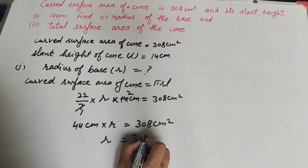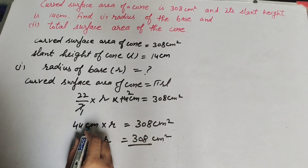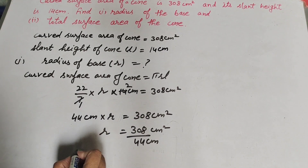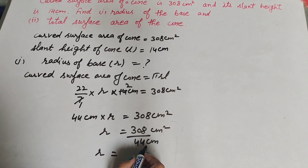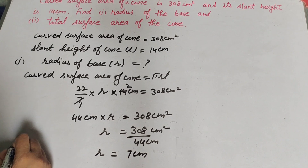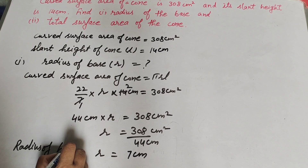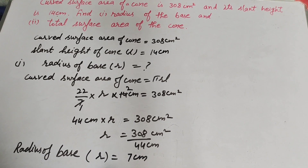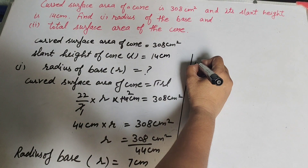So r = 308 ÷ 44, and we get the answer r = 7 cm. The radius of the base of the cone is 7 cm. Now we find the total surface area of the cone in the second part.